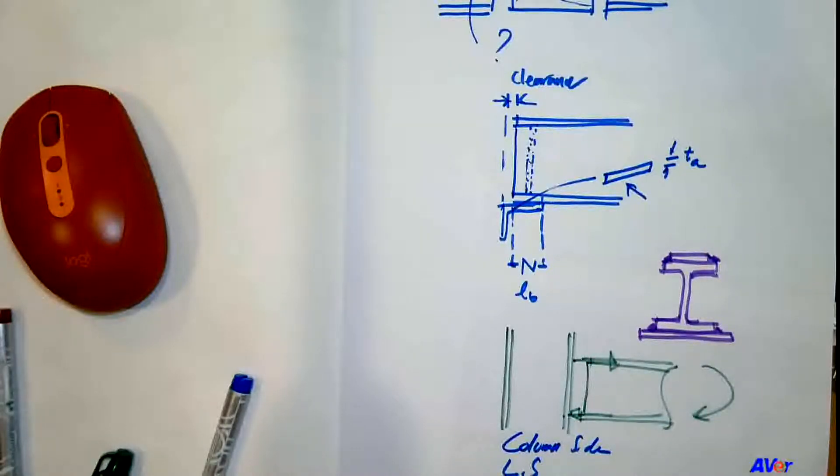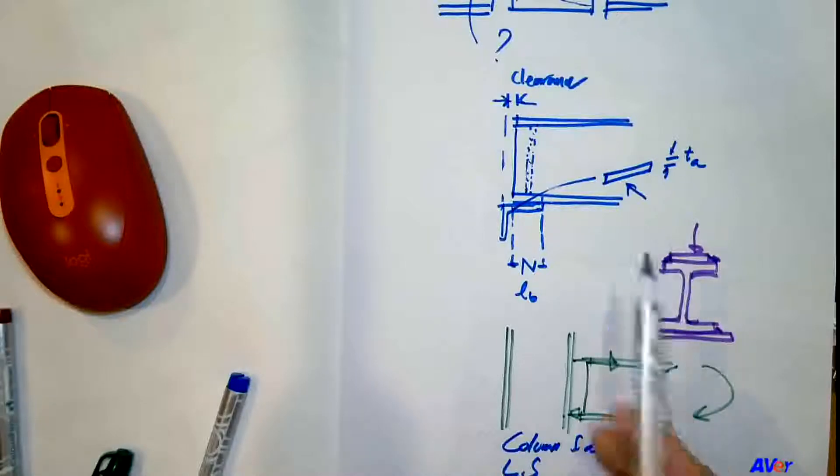It's inevitable that we need to have the field weld for the moment connection. So that's the case. And again, when you have the plates, you just go through the basic limit states - the plate yielding, plate rupture, the weld rupture, and so on. And then that's it.